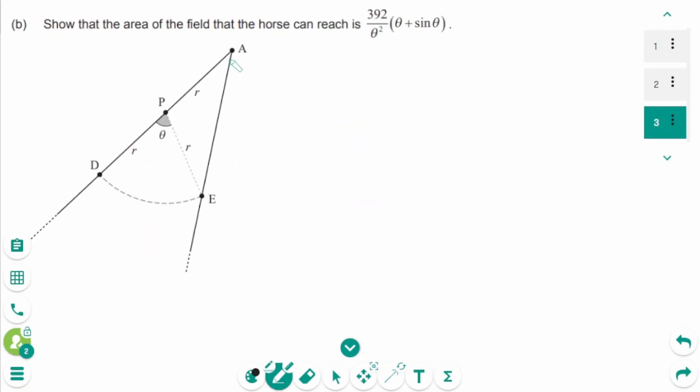Question B. This is how much of an area the horse can reach. Just find the sum of the sector and the triangle.